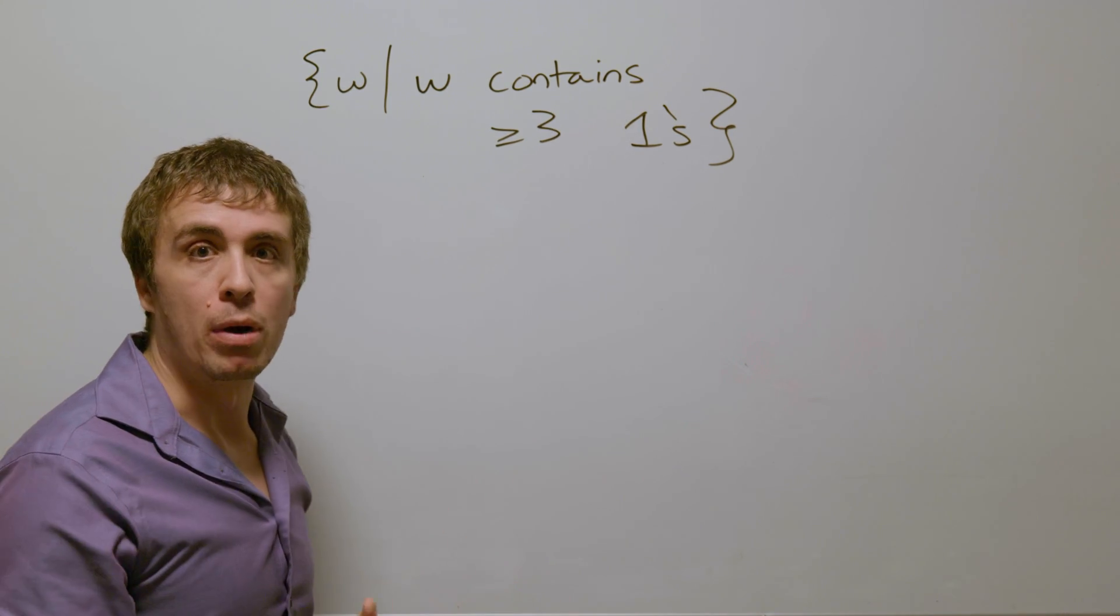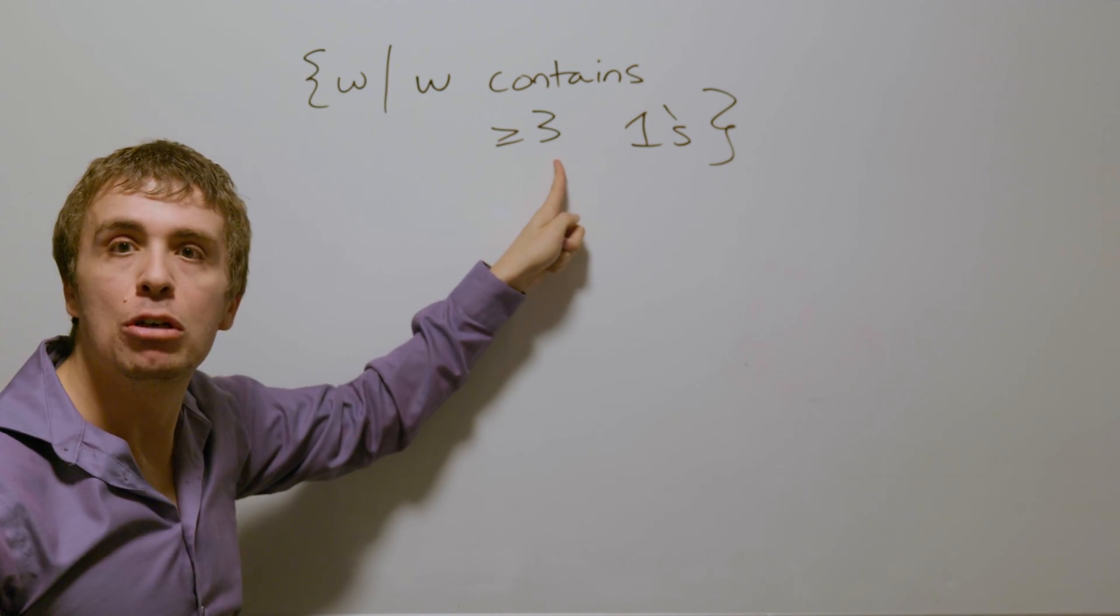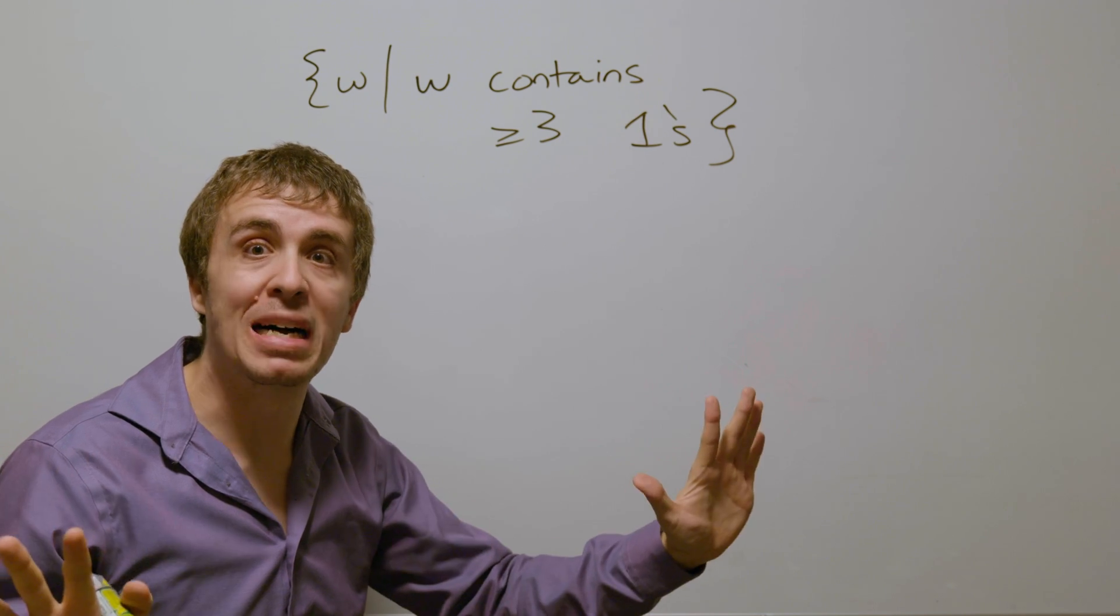So how should we approach this one? Let's first focus on the condition to be in the language, which means having at least three ones, and add all of the transitions otherwise later.